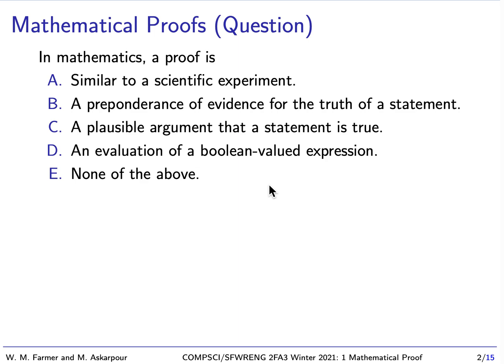Welcome back. The answer is E, none of the above. A, B, C, and D are not really mathematical proofs. A mathematical proof is not the same as a scientific experiment — in a scientific experiment, you have a hypothesis, do an experiment, gather data, and see if the data supports your hypothesis. A proof is also not a preponderance of evidence for the truth of a statement; it's not assembling evidence and concluding the statement is true. It's also not a plausible argument — plausibility is not enough. And D, evaluating a Boolean-valued expression, would be a very narrow form of proof.